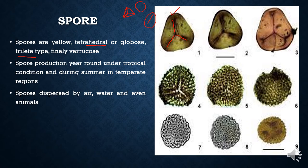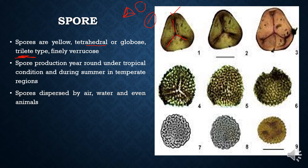All Ordovician ferns have this trilete spore. Those spores present much earlier than the Ordovician period have a cryptospore type, which is present in liverworts — a bryophyte. This trilete type of spore is of evolutionary significance: earlier to the Ordovician there were cryptospores, then came the trilete spore, and later the monolete spore. Due to this, Lygodium is called a very early precursor plant for all land plants.